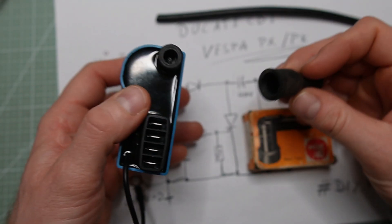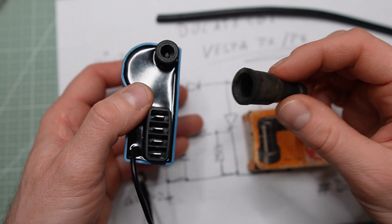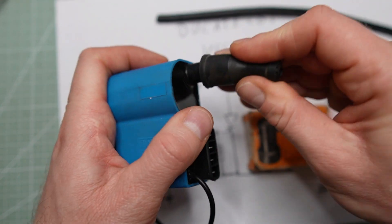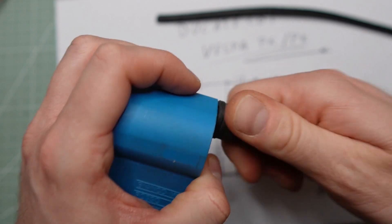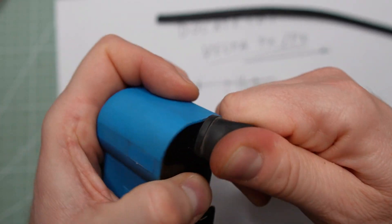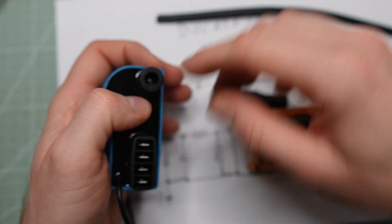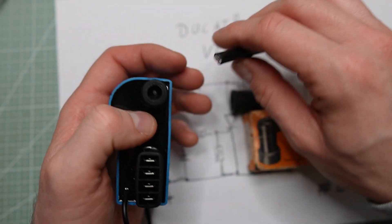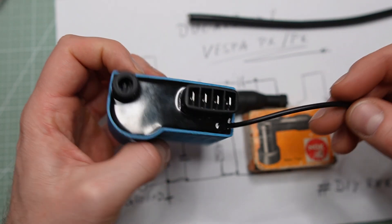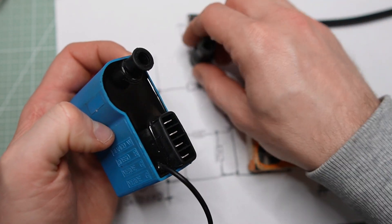I saw multiple times that some specialists are not using this grommet here, which is really, really important. It will prevent water from coming inside here. And you know, water and ignition is not a good partner. So therefore, always use it. That's the first one.